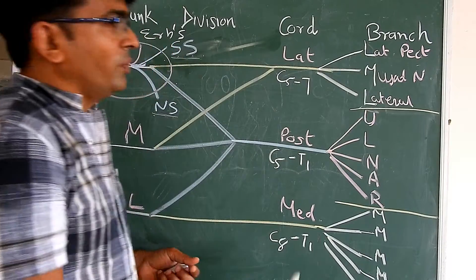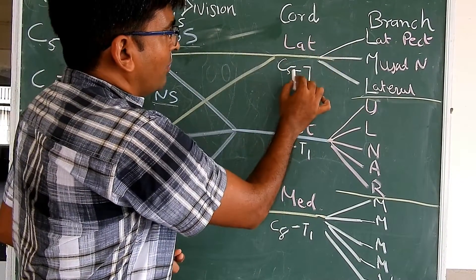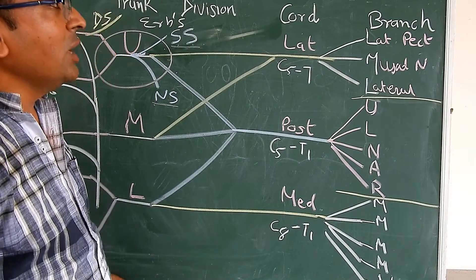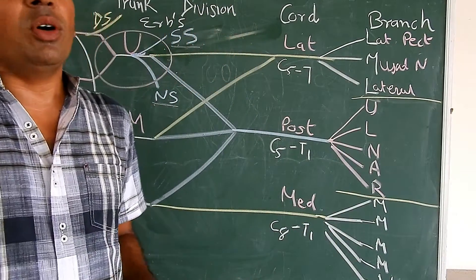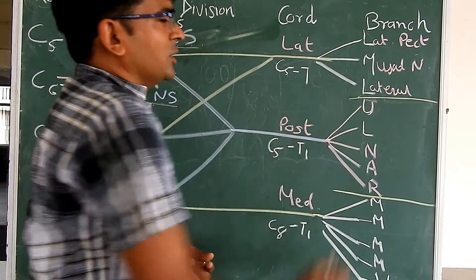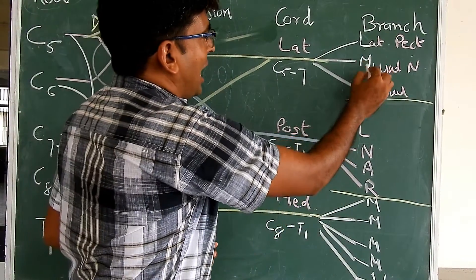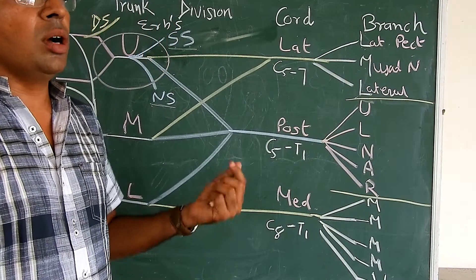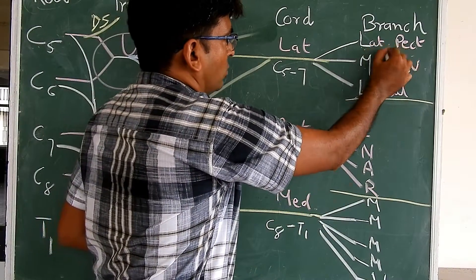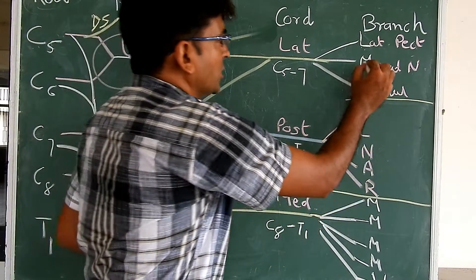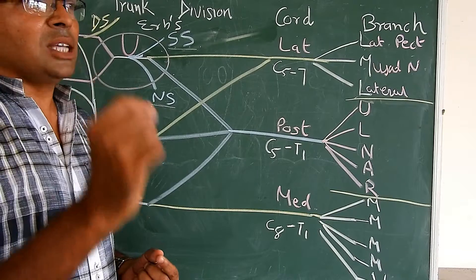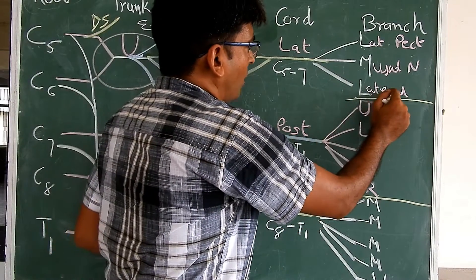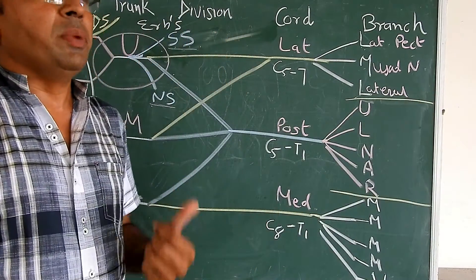To review: the lateral cord has a root value of C5 to C7, the posterior cord C5 to T1, and the medial cord C8 to T1. The branches of the lateral cord use the mnemonic L-M-L. L is for the lateral pectoral nerve (root value C5 to C7), which supplies pectoralis major and minor. M is for the musculocutaneous nerve, which supplies the coracobrachialis and the flexor muscles of the arm, and carries sensation from the forearm. L is for the lateral root of the median nerve (root value C5 to C7).